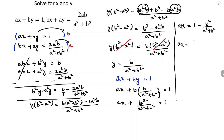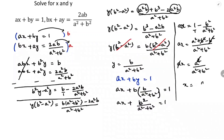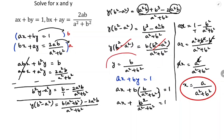Taking LCM as a square plus b square: ax equals a square plus b square minus b square by a square plus b square. Since b square minus b square cancels, ax equals a square by a square plus b square. Dividing both sides by a, x equals a by a square plus b square. So the value of x is a by a square plus b square, and the value of y is b by a square plus b square. Thank you.